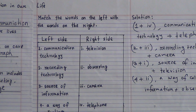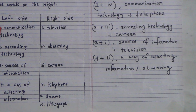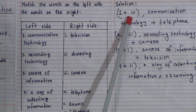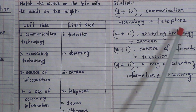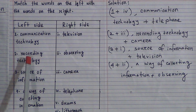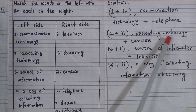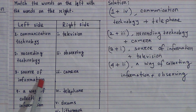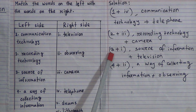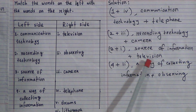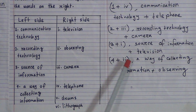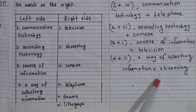I am repeating all the matching answers. Number 1: communication technology will be matched with number 4, telephone — one plus four, communication technology plus telephone. Number 2: recording technology will be matched with number 3, camera — two plus three, recording technology plus camera. Number 3: source of information will be matched with number 1, television — three plus one, source of information plus television. Number 4: way of collecting information will be matched with number 2, observing — four plus two.